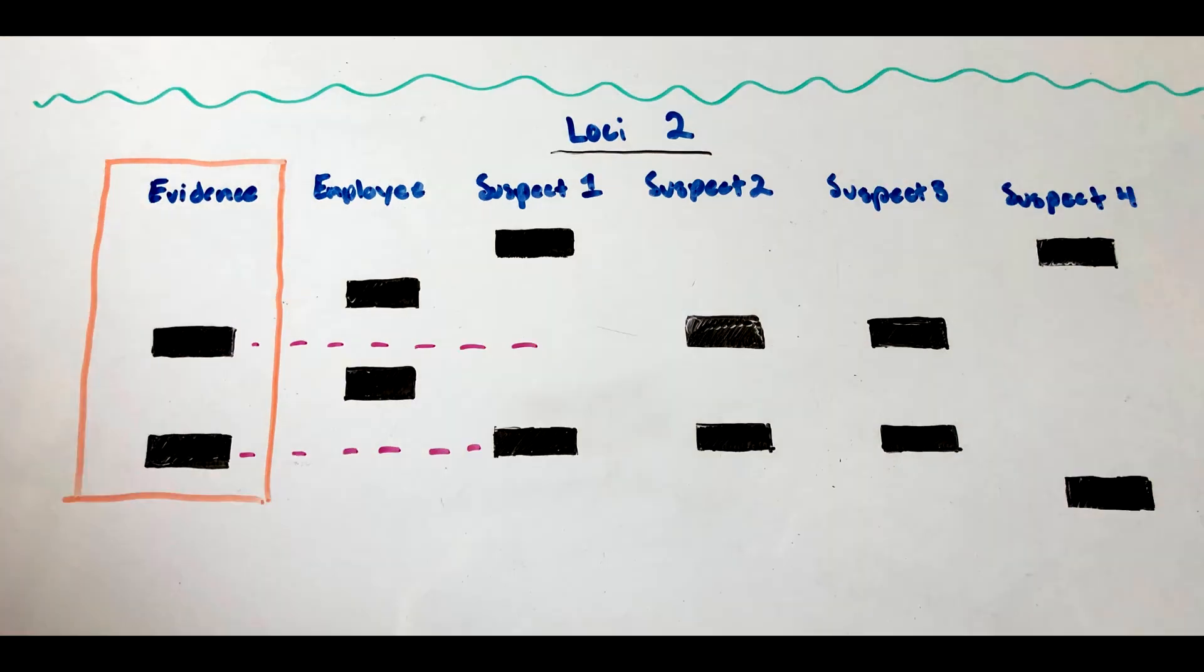Continuing the lines over, it can be seen that the bars of suspect 1 do not line up with the evidence either.